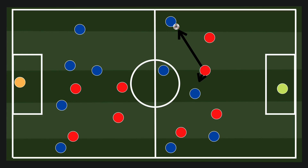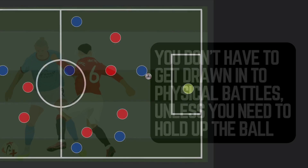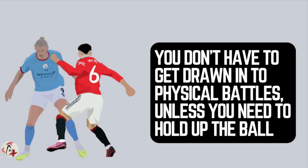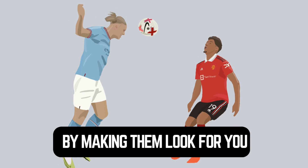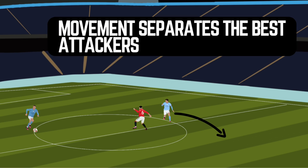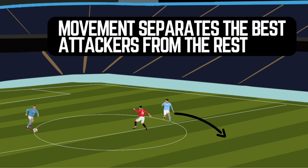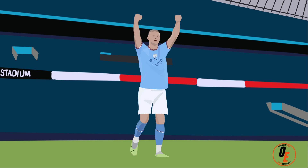Any top attacker will understand the importance of making the defender's job uncomfortable. They want to look at the ball and see you at the same time. If they can hold you in front of them, they're happy. But if you move into a position where you get onto their blind side, they're going to have a much more difficult time getting you under control. You don't have to get drawn into physical battles unless you need to hold up the ball or be that focal point for the team. Otherwise, you want to get the defender out of their comfort zone by making them look for you. If they look for you, they're potentially looking away from the ball. And movement separates the best attackers from the rest. So focus on getting on the blind side and work on your positioning to really up your game.